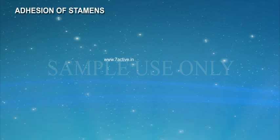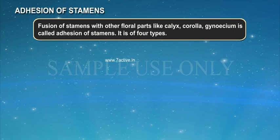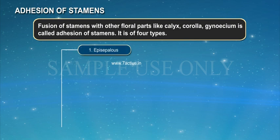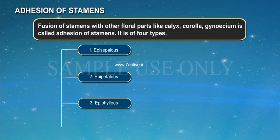Adhesion of Stamens. Fusion of stamens with other floral parts like calyx, corolla, or gynoecium is called adhesion of stamens. It is of four types: 1. Episepalous, 2. Epipetalous, 3. Epiphyllous, 4. Gynostegium.